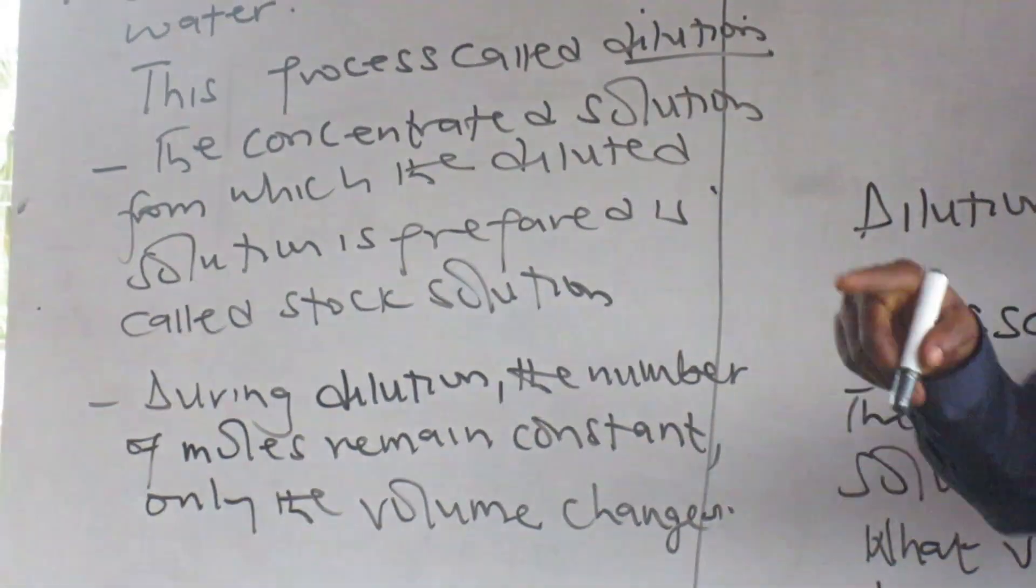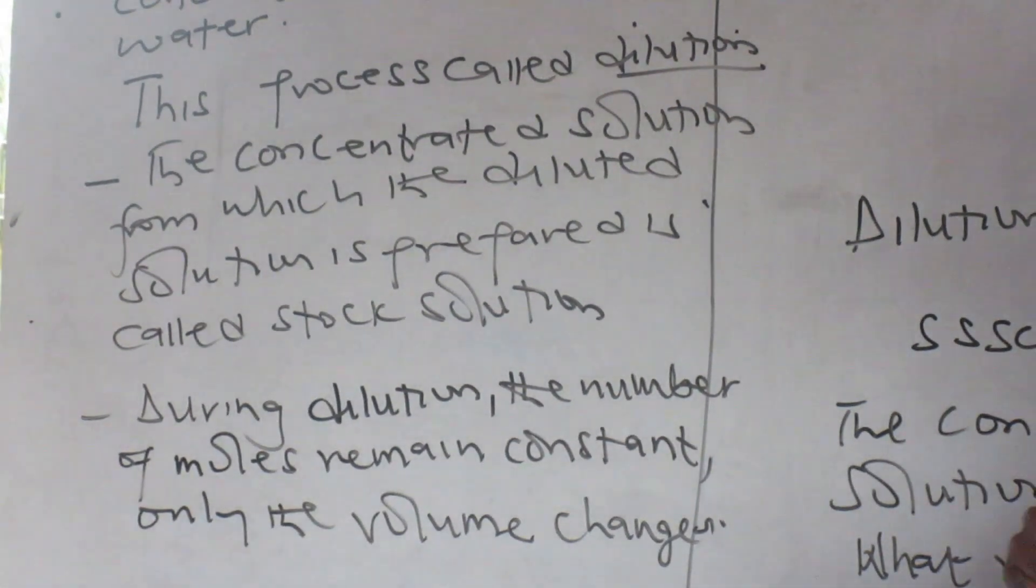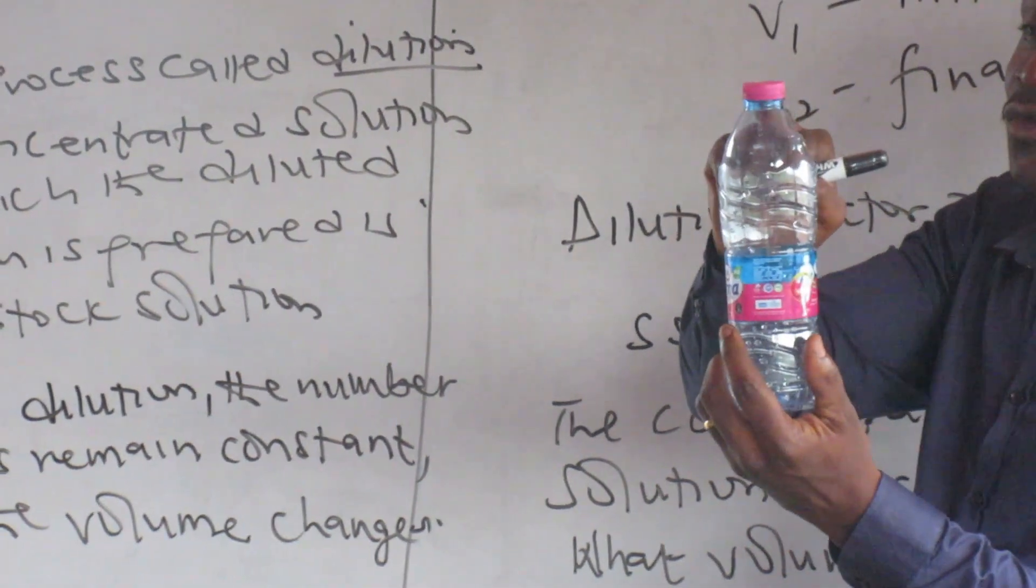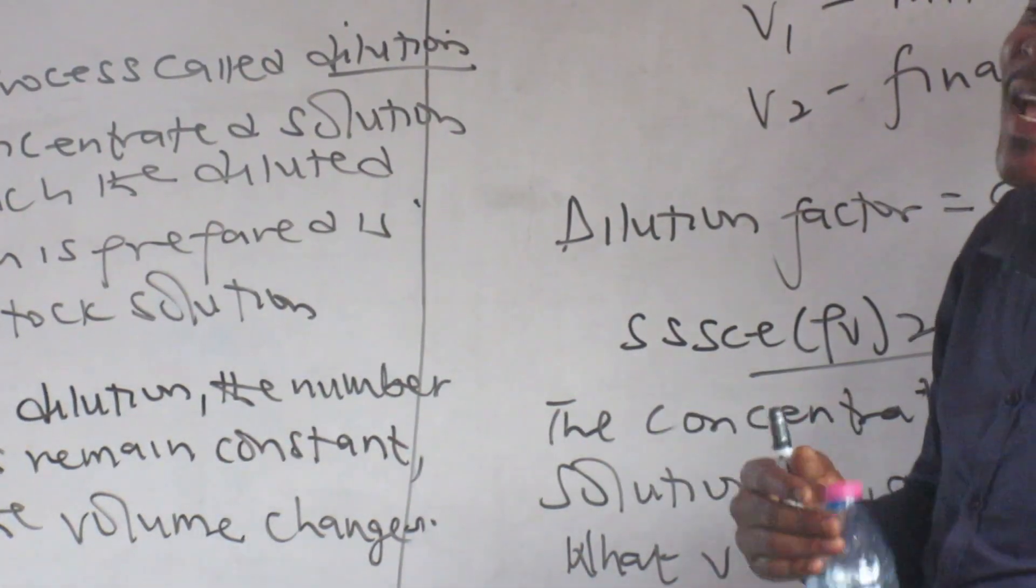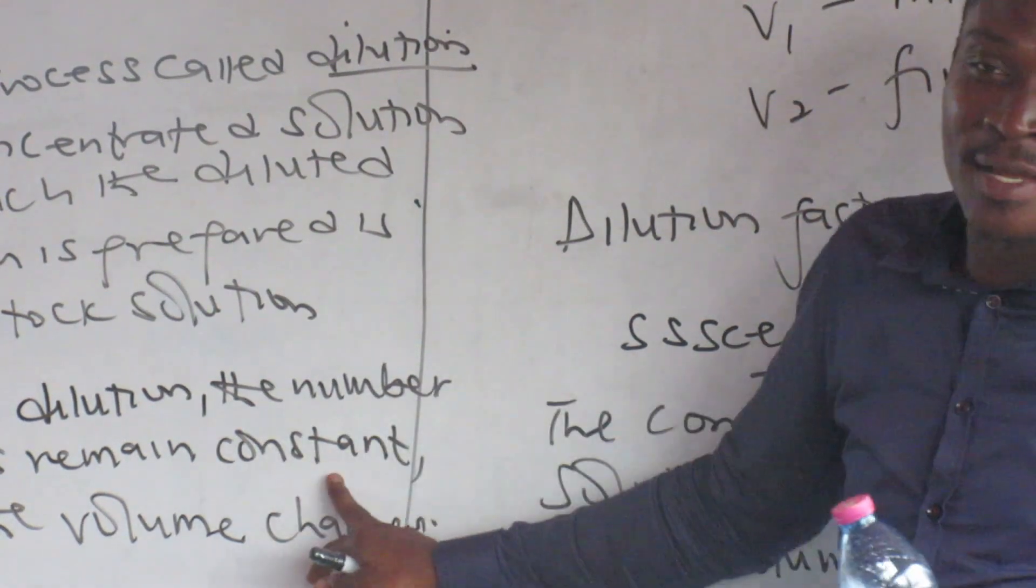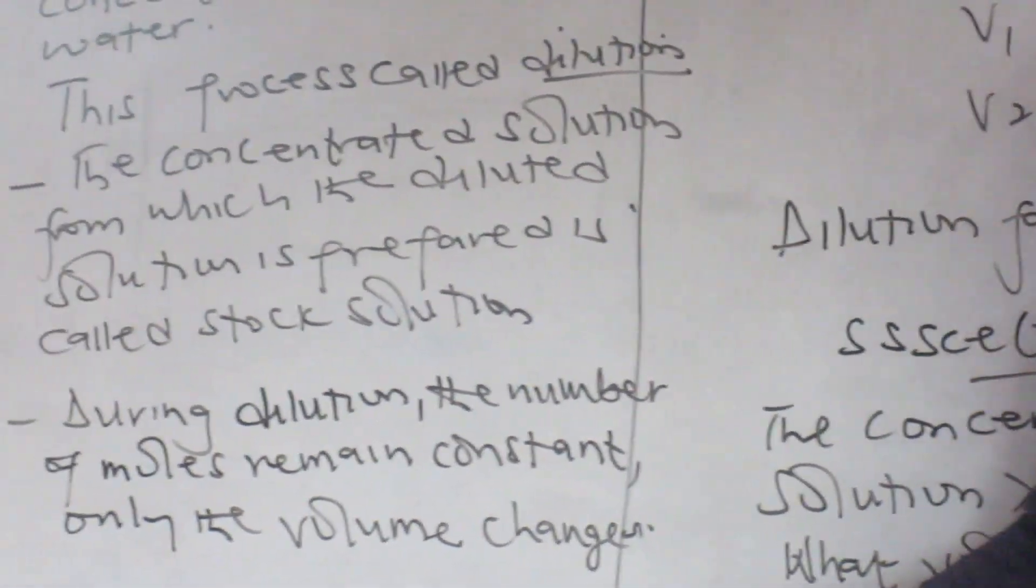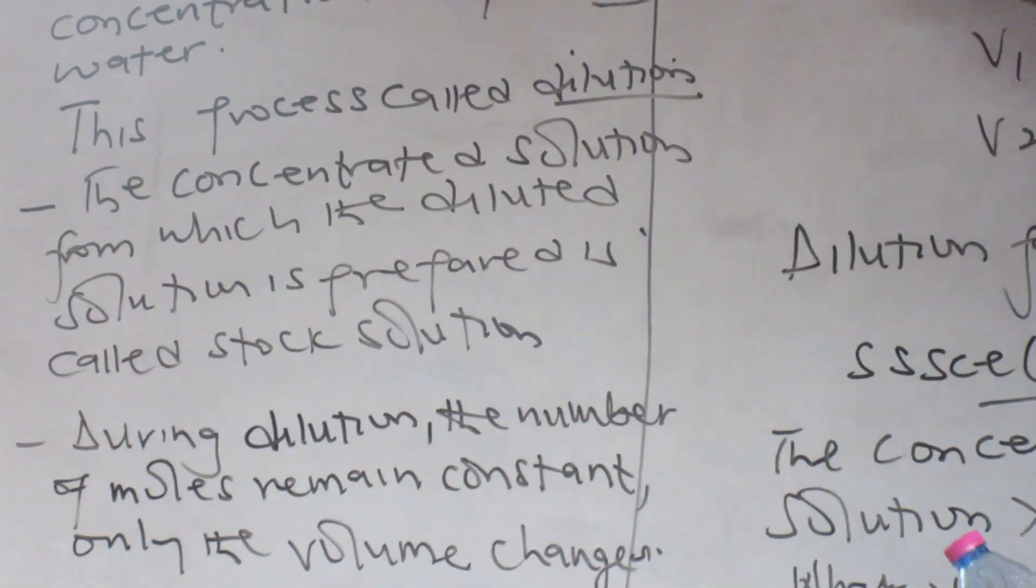Standard solutions can be diluted to smaller concentrations by adding water. The process is called dilution. Dilution is the addition of more solvent to the solution, not just water. It suggests that the solvent can be water.